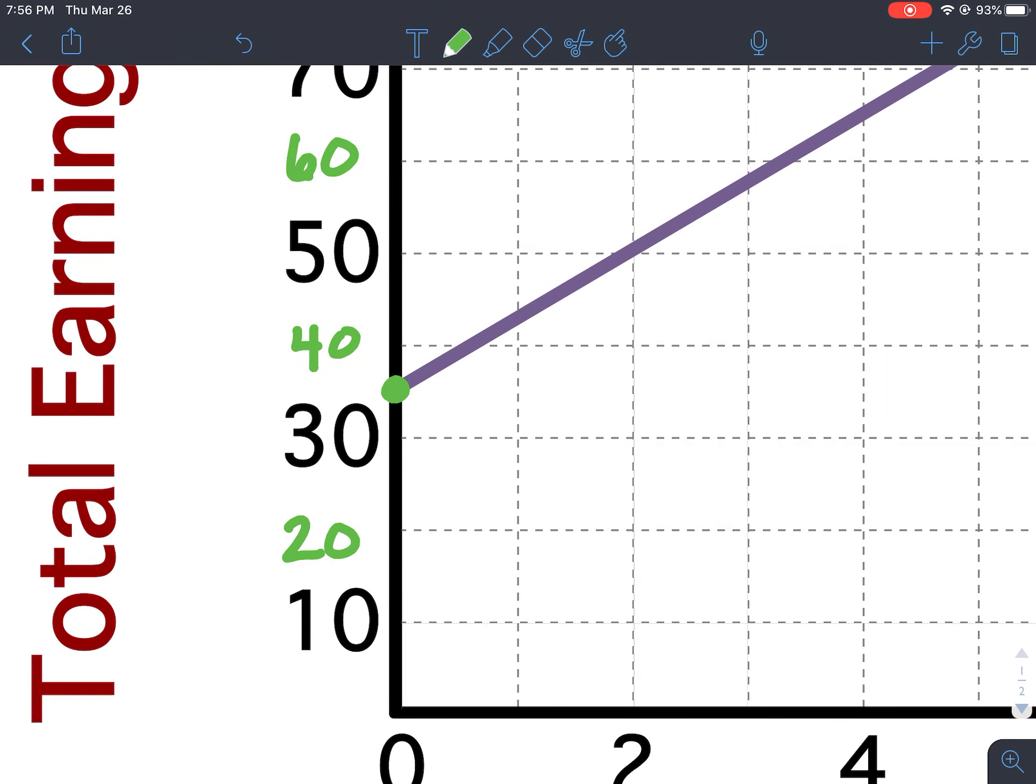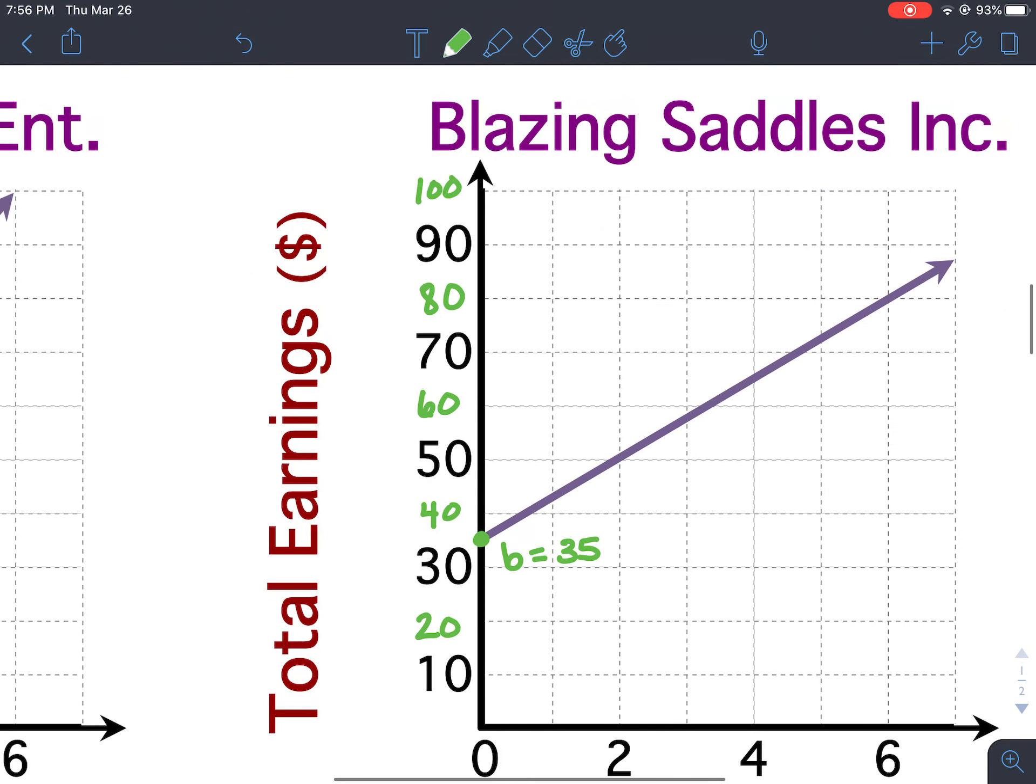So our initial value, our y-intercept, is halfway between 30 and 40. Well, that means that our y-intercept between 30 and 40 would be 35. So our initial value is $35. So that means Blazing Saddles charges $35 as a flat rental fee.